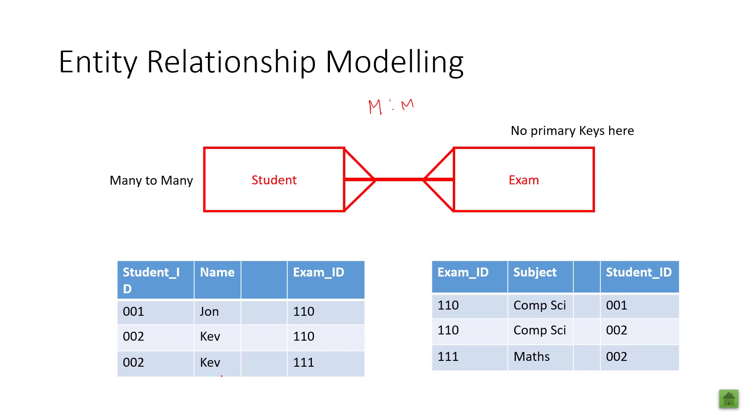Here are the student IDs, 01, 02 and 02 again. Name, we've got John, Kev and Kev. The exam ID, we've got 110, 110 and 111. Computer Science, Computer Science, Maths 001, 002, 002.